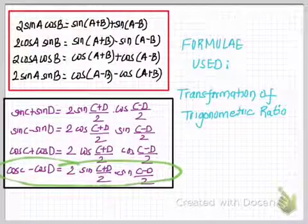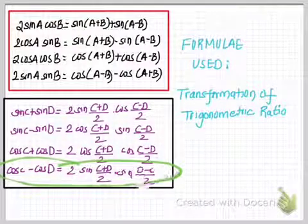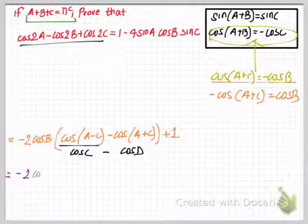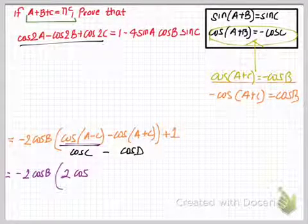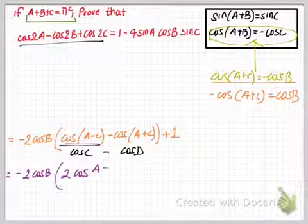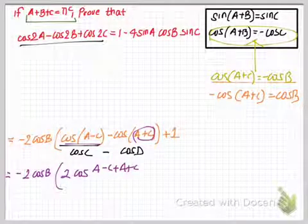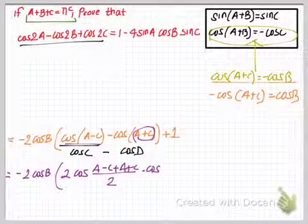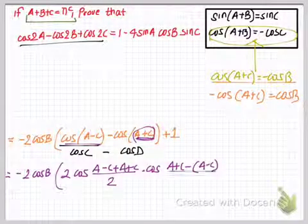Now I'm going to apply the formula cos C minus cos D, which equals 2 sin((C plus D)/2) times sin((D minus C)/2). Applying this formula: 2 cos((C plus D)/2) — here C is (A minus C) and D is (A plus C) — giving cos((A plus C)/2) times cos((A minus C)/2), plus 1.